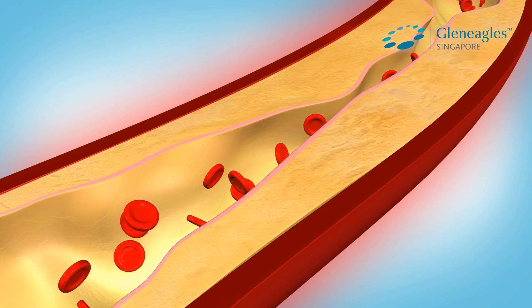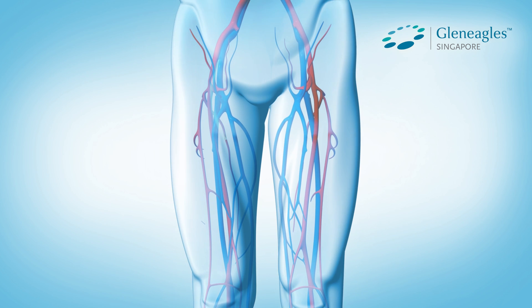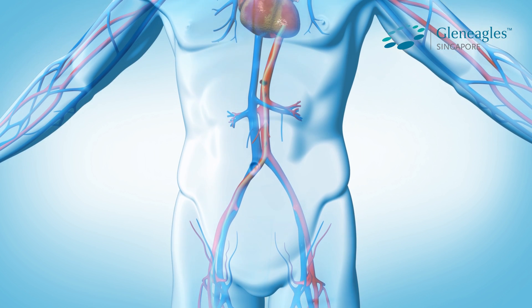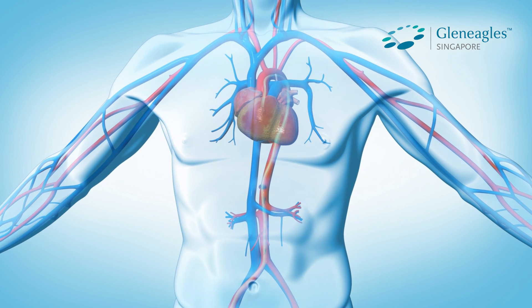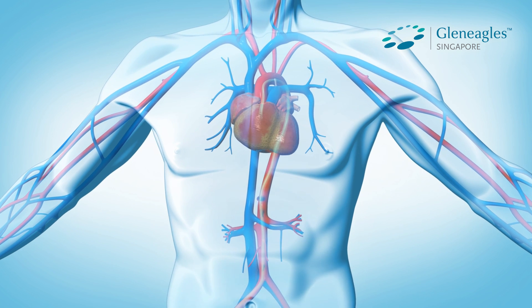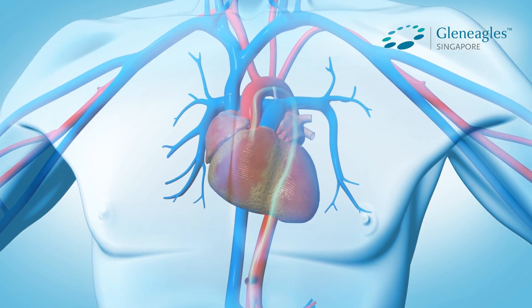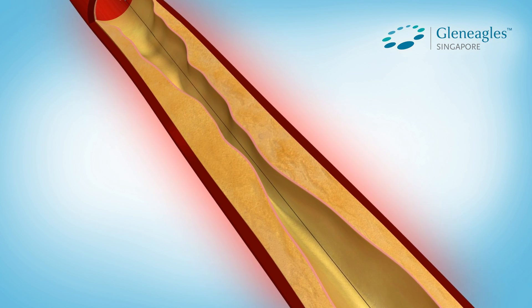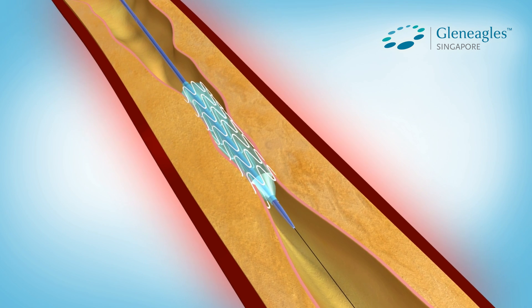An angioplasty involves inserting a thin flexible tube known as a catheter, with a small balloon tip, into the main artery at the groin area. This tube is then guided to travel along the circulatory system until it reaches the narrowed artery within the heart.